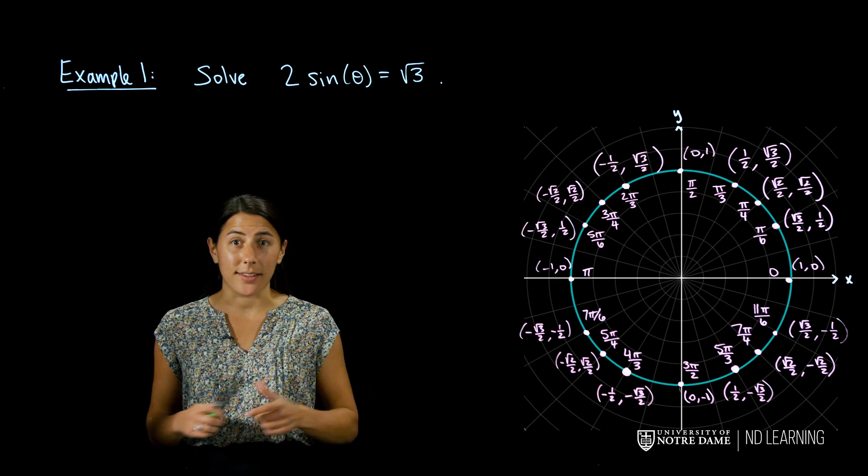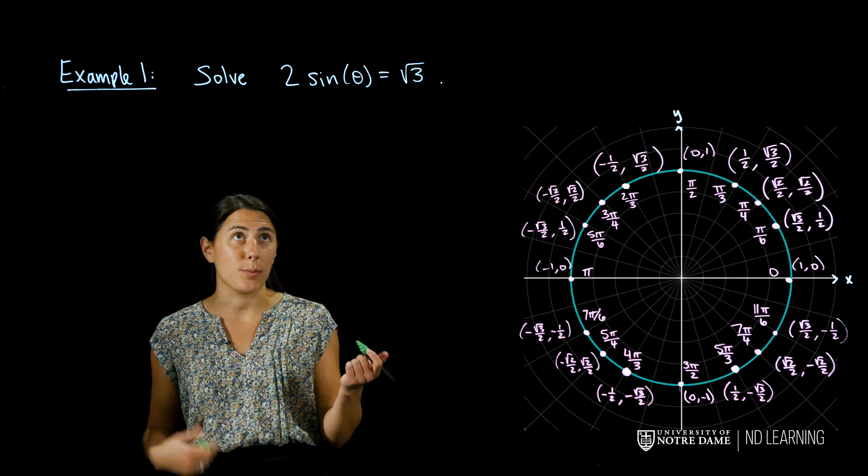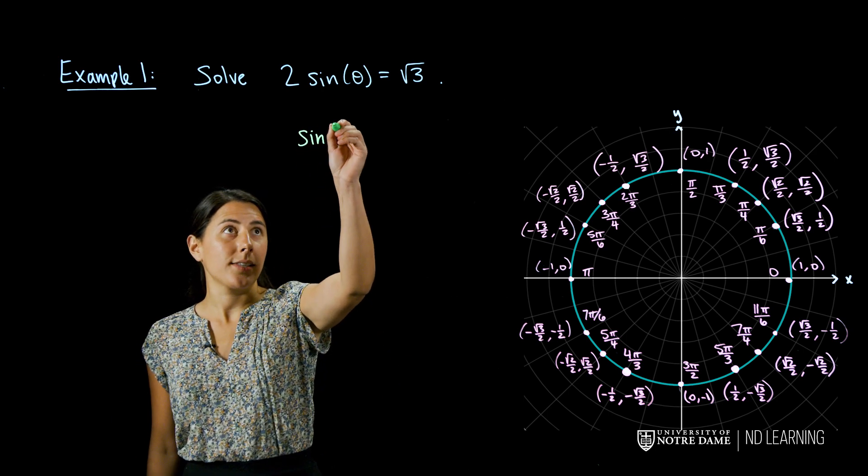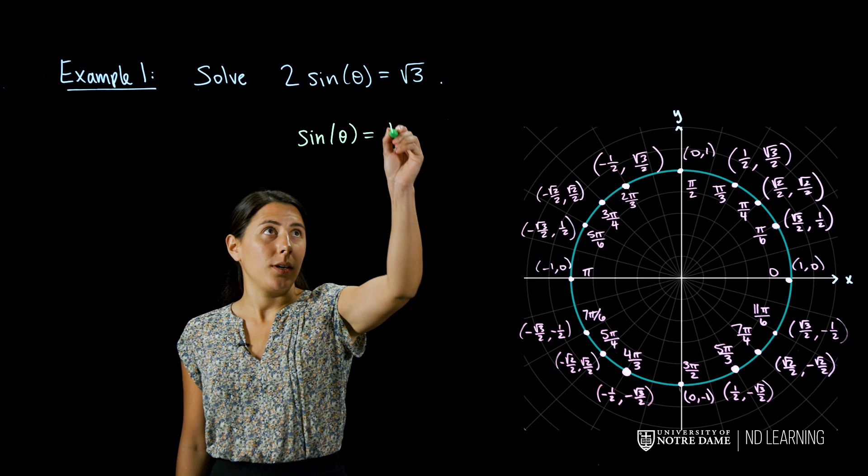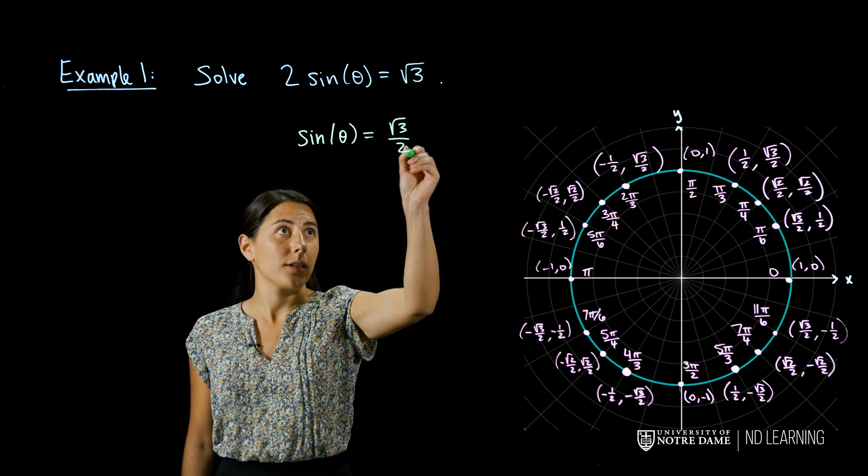Well the first thing algebraically that I would do is divide both sides by 2. So this is equivalent to sine of theta being equal to the square root of 3 over 2.